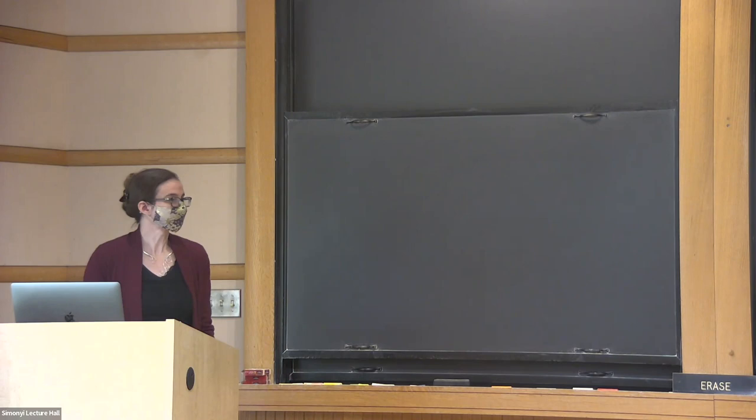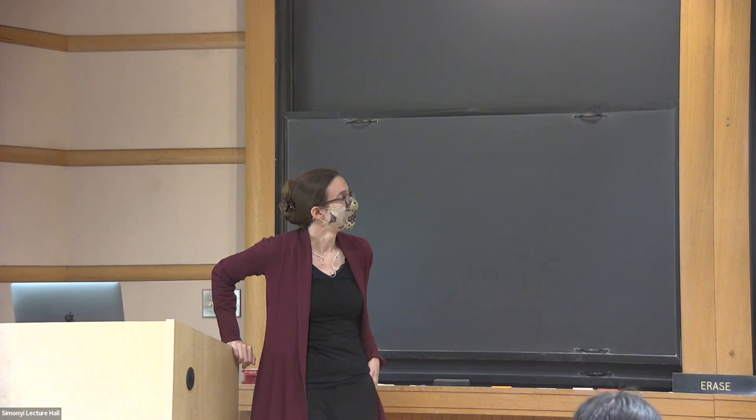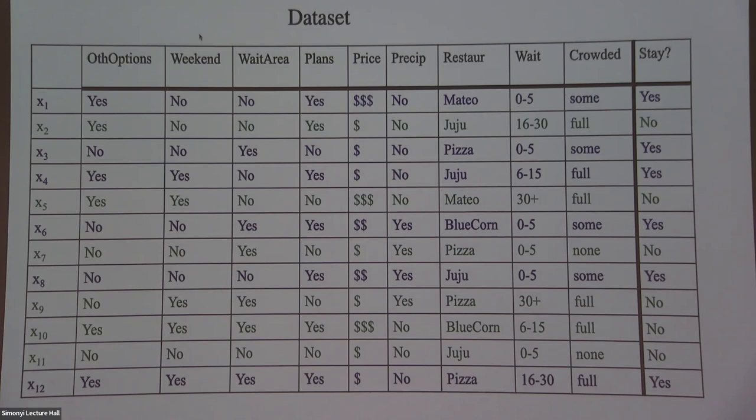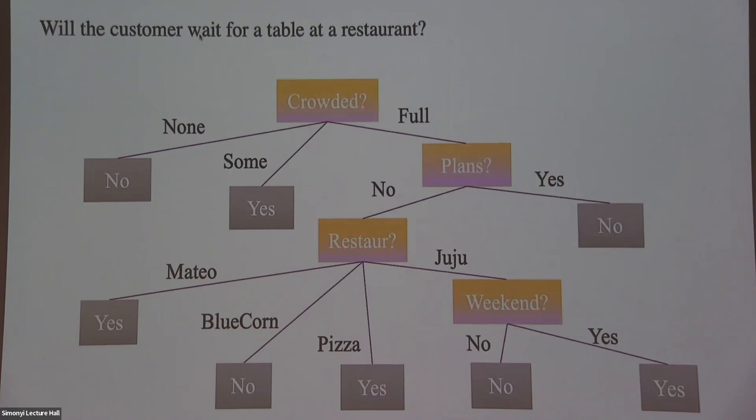From last time, we were in the middle of figuring out the splitting criteria for decision trees. This is the dataset we're going to use, called data points, with different features that could potentially split on — whether the customer is going to wait for a table at the restaurant. We're going to try to construct trees like this from the dataset.